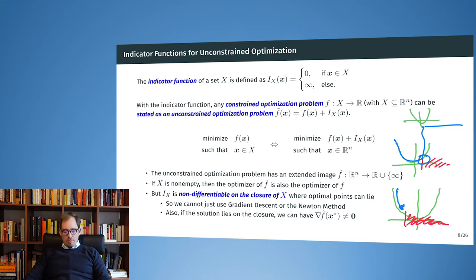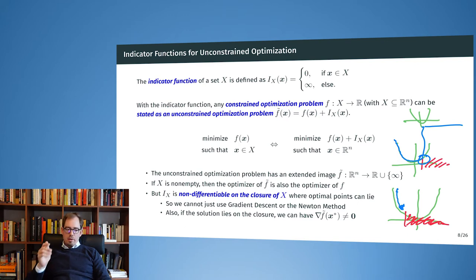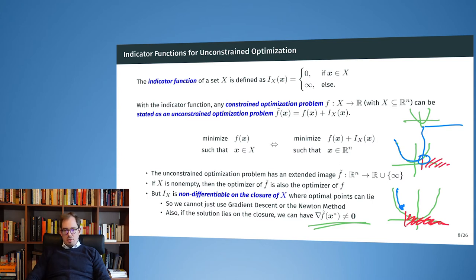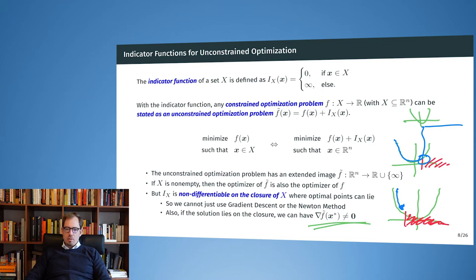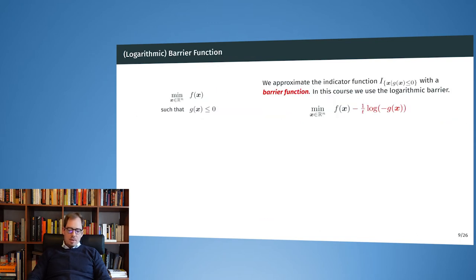Earlier with the Newton method we assumed that at the optimum the gradient is zero, and the Newton method finds the place where the gradient is zero. But in the constrained case we no longer have a guarantee that the optimizer will be at a place where the gradient equals zero. Adding the indicator function transforms the problem into unconstrained form, but our optimization algorithms cannot handle this kind of discontinuity. The idea to get around that is to approximate the indicator function.